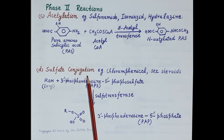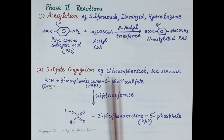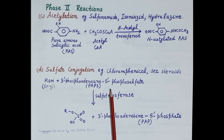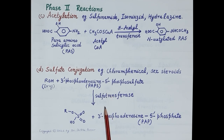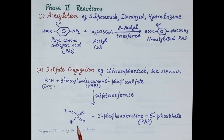The next type of phase 2 reaction is sulfate conjugation. Phenolic compounds with an OH group — for example chloramphenicol and steroids — undergo sulfate conjugation. 3-phosphoadenosine-5-phosphosulfate donates the sulfate group, and the reaction is mediated by the non-microsomal sulfotransferase enzyme. The drug is conjugated to the sulfate group and this metabolite is excreted in the feces.